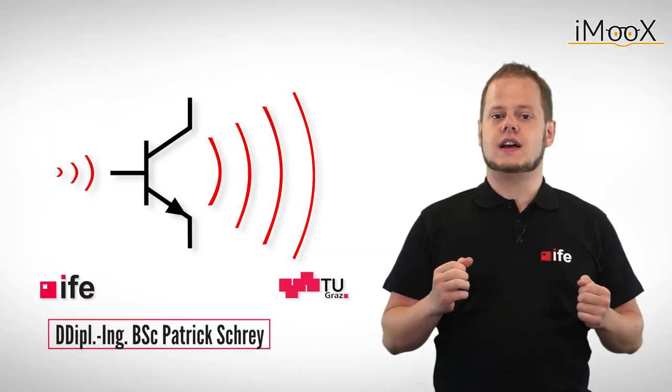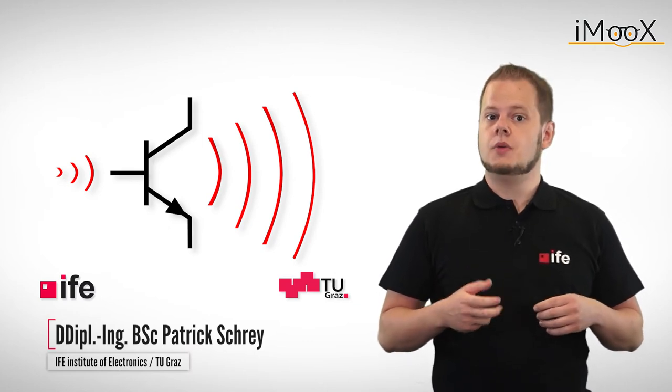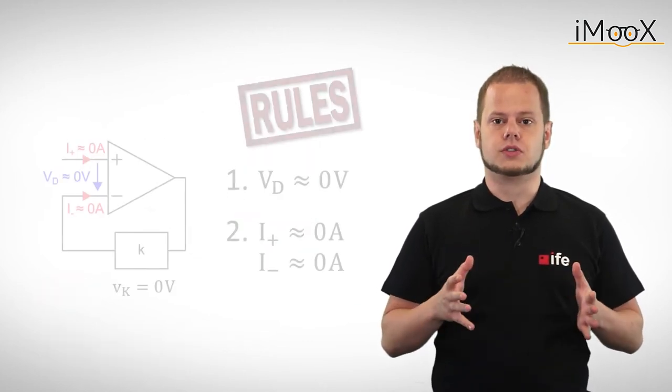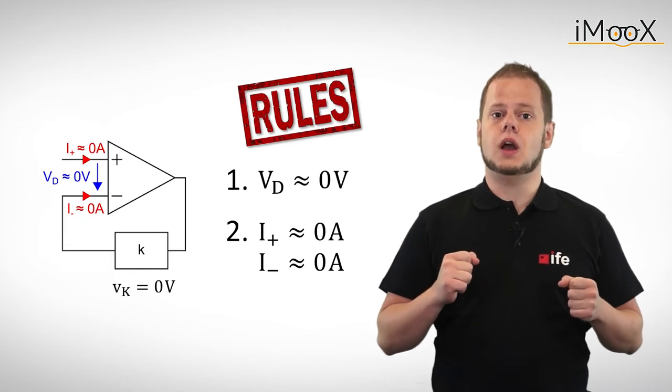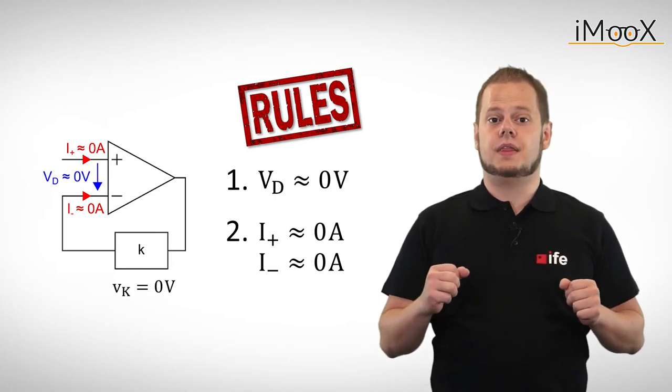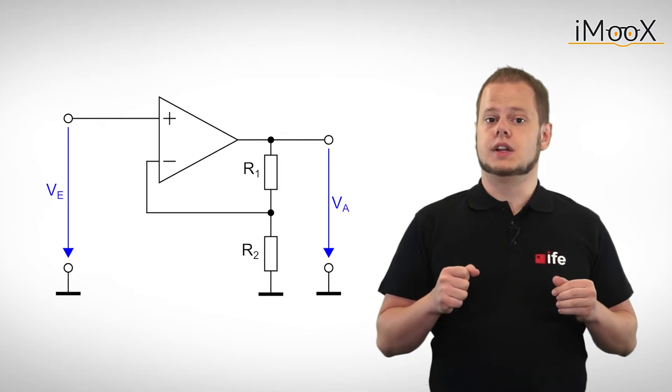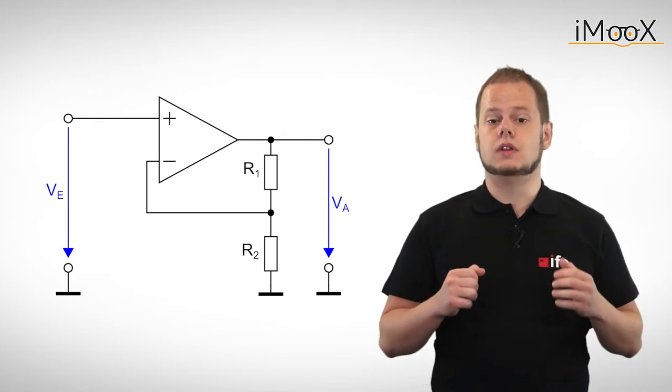In our last video we analyzed our first operational amplifier circuit with negative feedback. We derived a couple of very simple rules which allow us to determine the output voltage of our circuit. Our first circuit amplified the input signal. Mathematically speaking we multiplied the input signal by a constant factor known as the gain.